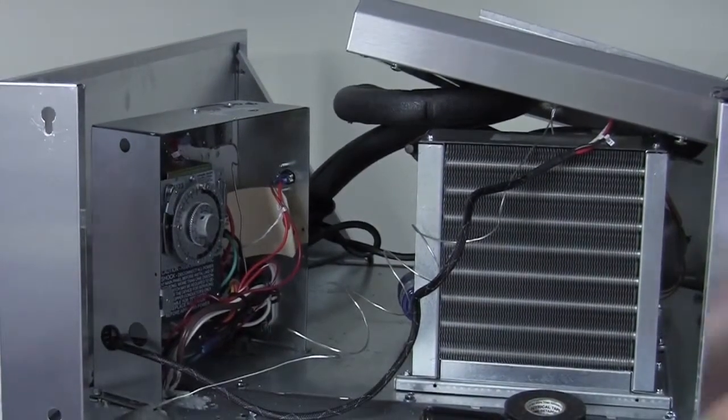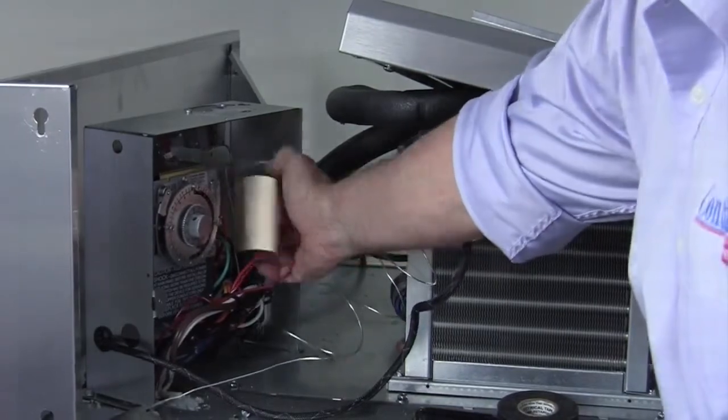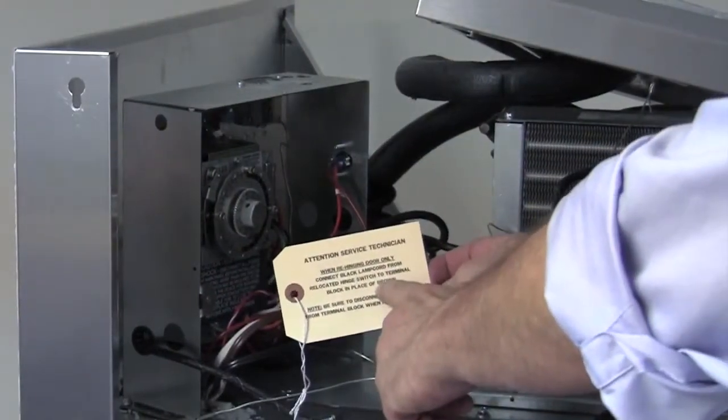In the control box you'll see the black lamp cord wire with a tag attached giving you the instructions on how to change the wiring on the terminal block.